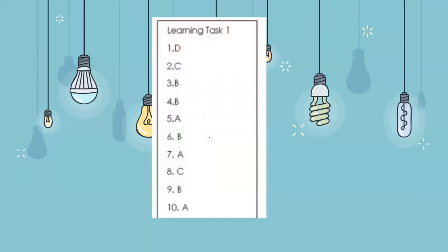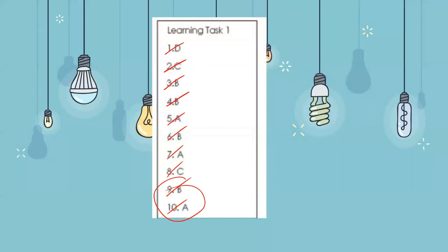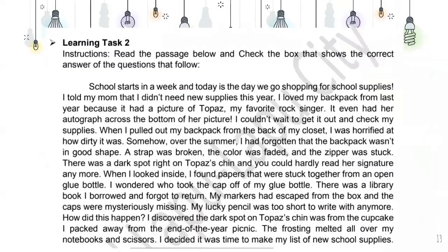Let's check your answers. Unfortunately, in this quiz we only have up until number eight, so please disregard nine and ten. Let's go to learning task number two. Write down in your answer sheet 'Learning Task Number 2.' Read the passage below and check the box that shows the correct answer to the questions that follow. Since you have a separate answer sheet, write your choice or the phrase of your choice beside the number for learning task number two.